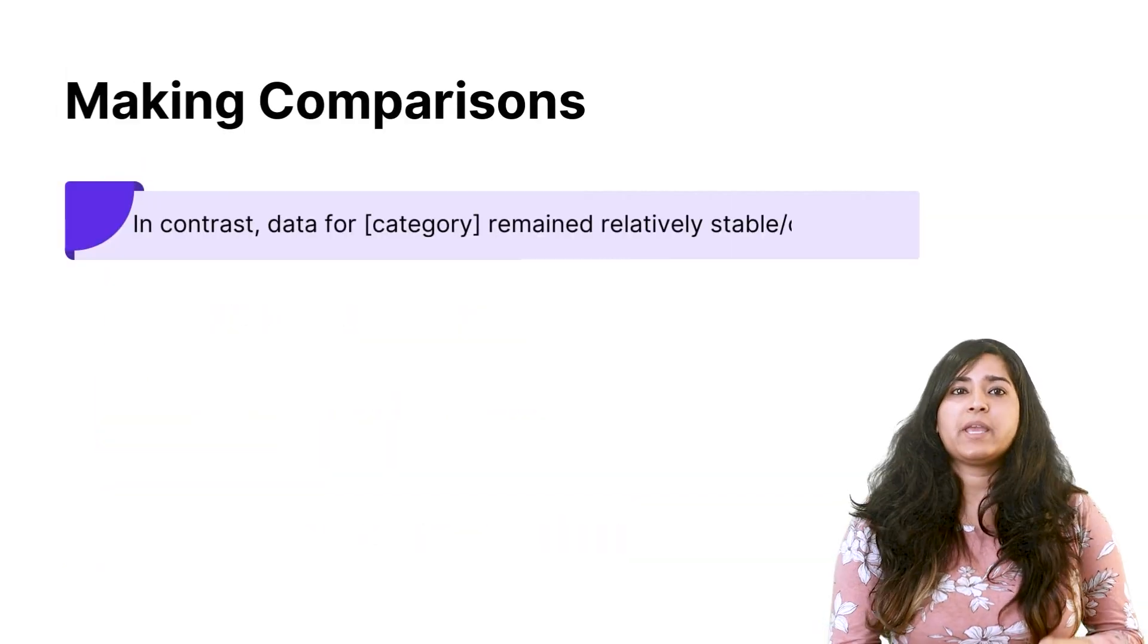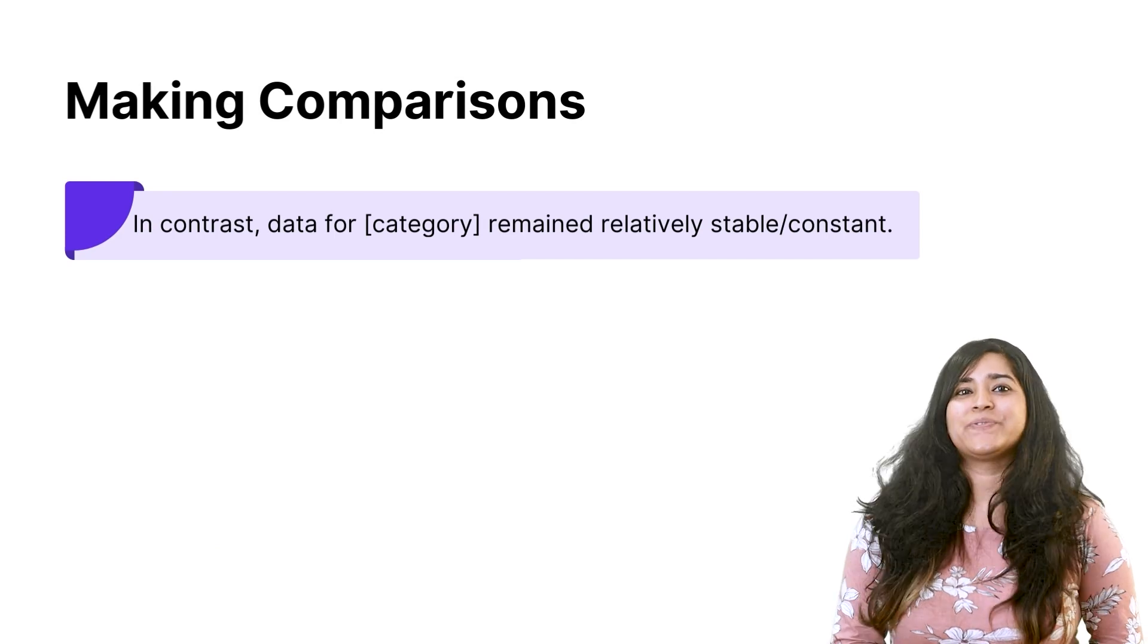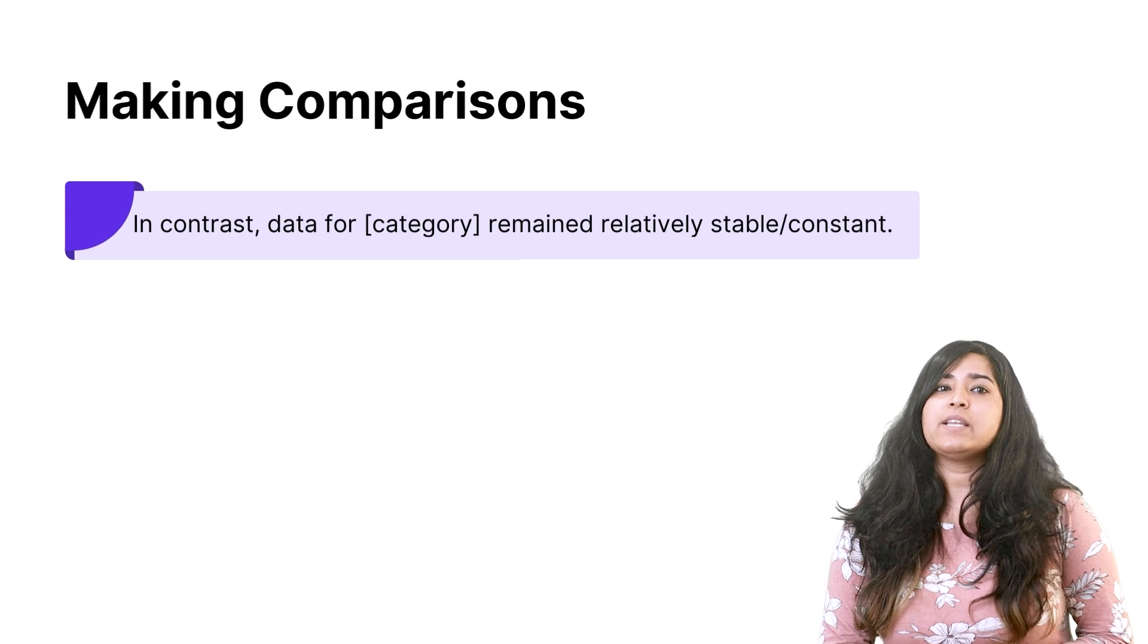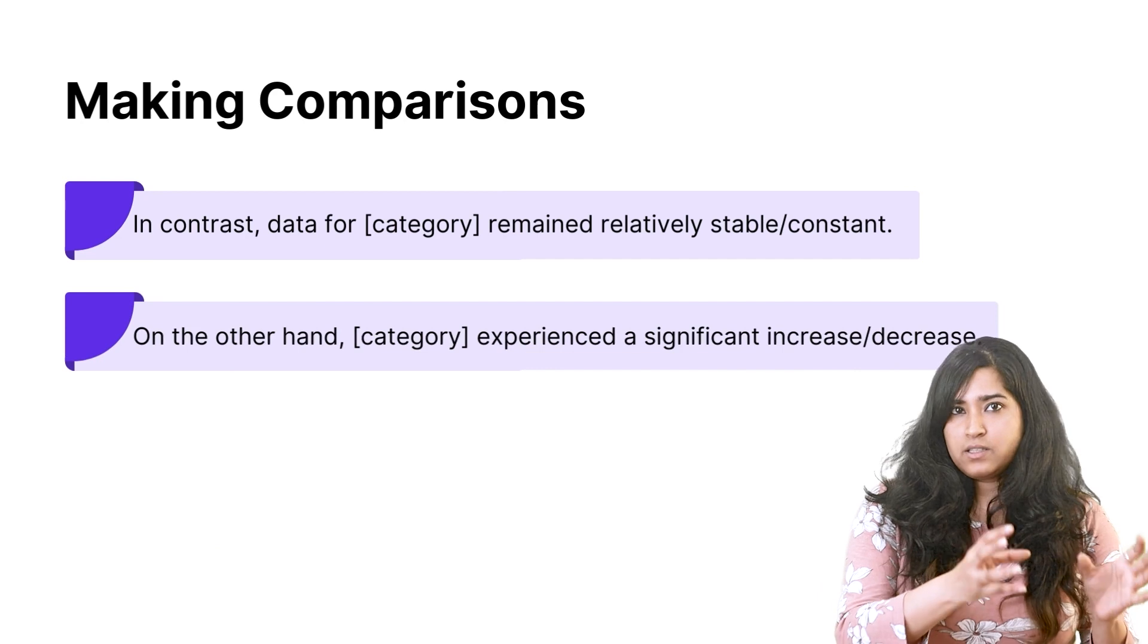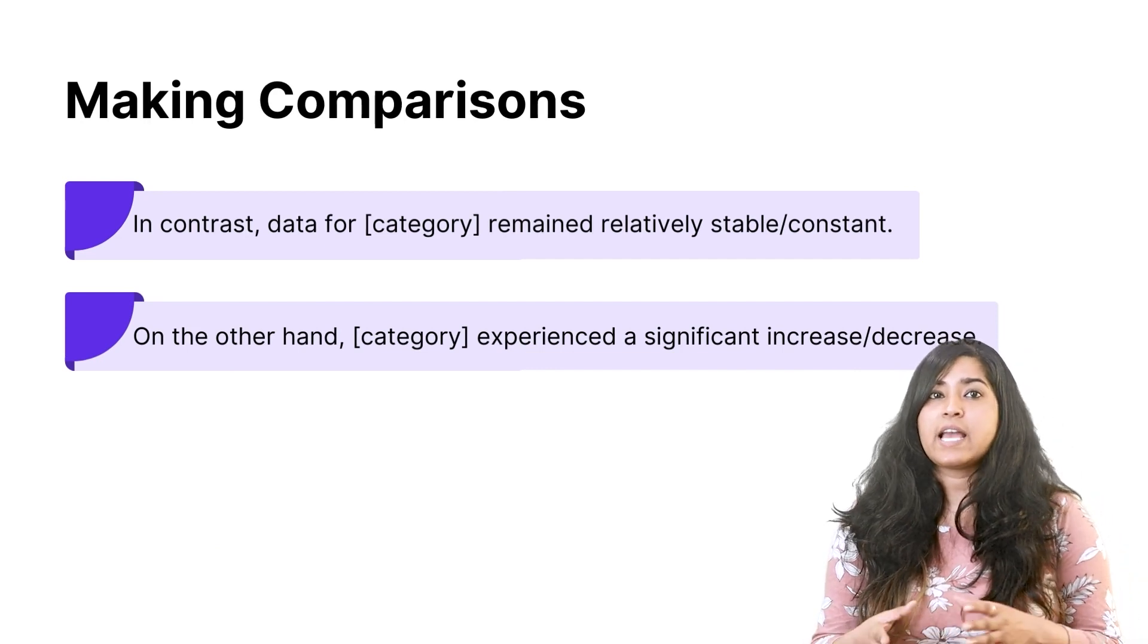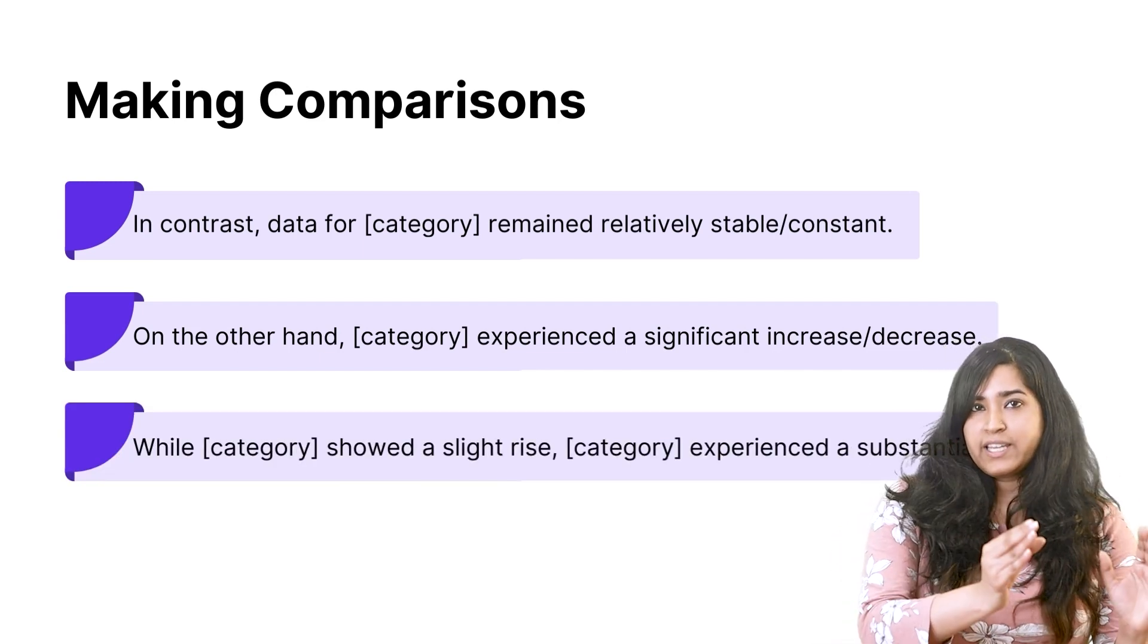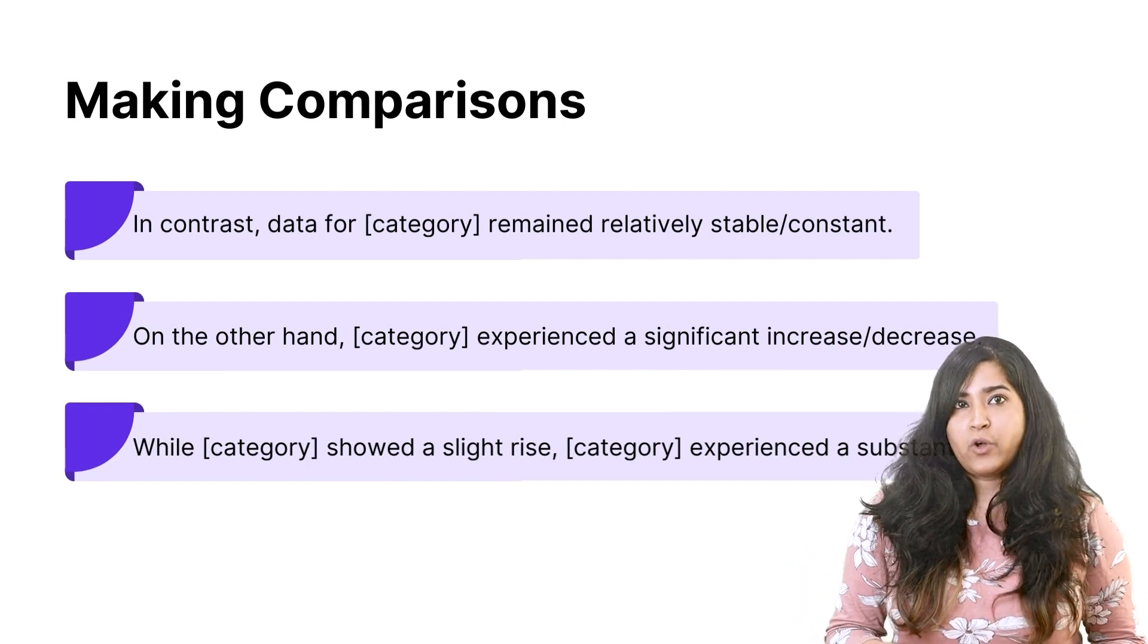Now, as the question asks you to make comparisons wherever relevant, you can use these sentences to do so. First of all, in contrast, data for a specific category remained relatively stable and are constant. Or, on the other hand, the specific category you're talking about experienced a significant increase and or decrease. Again, you can also say, while certain categories showed a slight rise, the next category experienced a substantial fall.